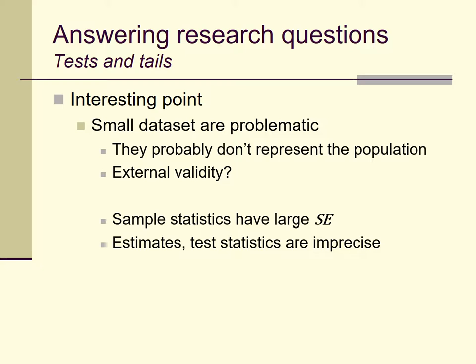Another related reason is that when we think about small samples, the sample statistics we compute — whether descriptive statistics like group means or test statistics like a t-value — are all going to tend to have large standard errors. This means the estimates we make from the sample out to the population as a whole are going to be necessarily imprecise. The standard error for the mean fear response in the alcohol group with only five people will be much larger than it would be with 50 people, making our t-statistic also pretty imprecise.